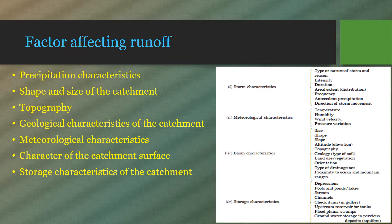Next is topography. The topography of the catchment area has a significant effect on runoff. A steeply sloping drainage basin produces greater runoff because of steep slopes which increase velocity. If the catchment is mountainous and located on the windward side of the mountain, the intensity of rainfall will be more and hence runoff will be more.